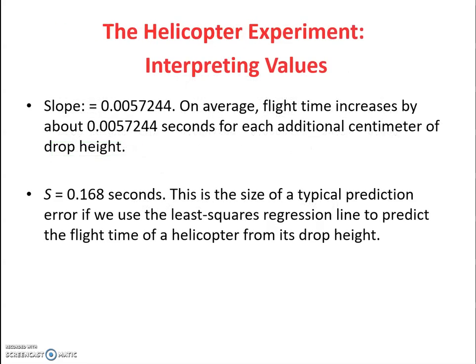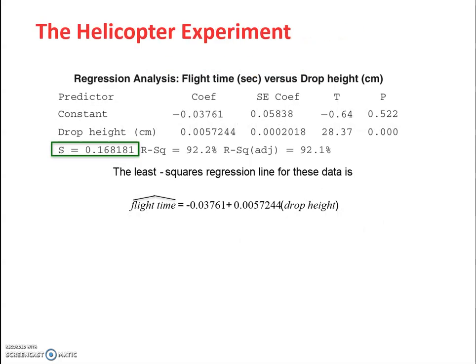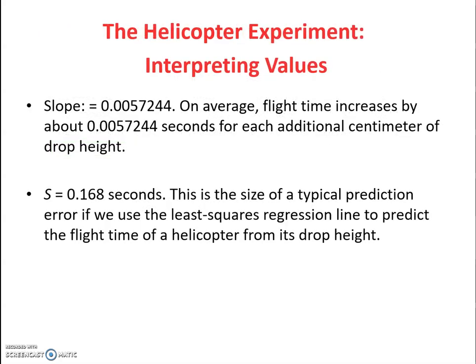If we want to interpret, the slope was 0.0057. We saw that right there. So on average, the flight time increased by about 0.005 seconds for each additional centimeter of drop height. As x changes, how does y change?